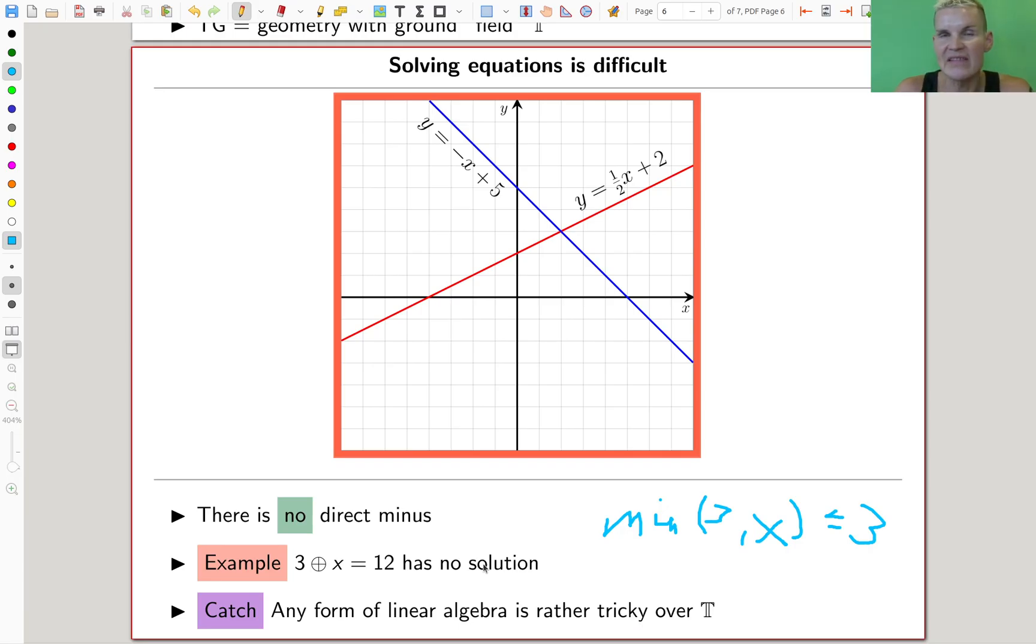Just to give you an example: the equation 3 ⊕ x = 12 has no solution, because the plus is the min. So min of x and 3, whatever x is, this is at least 3. So there's an equation, a very simple equation, it has no solution. That's why it's called semi. There is no minus in this thing. There is no way to invert the min process. And this leads to the five percent that I usually like to mention, where algebraic geometry is easier than tropical geometry. There is no direct minus, there is no tropical minus. So solving equations is much more difficult. Linear algebra where you usually need to solve equations is really, really, really difficult over the tropical semi-ring.